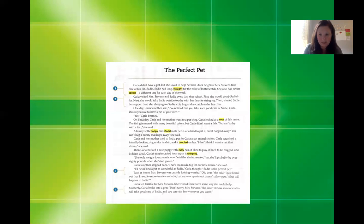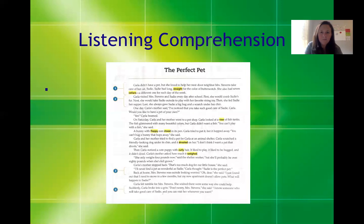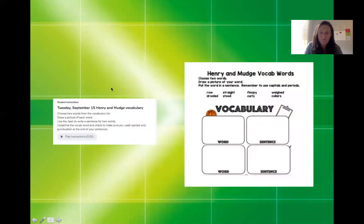All right. I hope you enjoyed that listening story and those comprehension questions that went along with our new vocabulary words that we're learning this week. After you feel good about the vocab words that I just talked to you about, I want you to think about, well, you're going to be going on Seesaw. And today's assignment is called Henry and Mudge Vocab Words. You are going to choose two words. Draw a picture of your word and put the word in a sentence. Remember to use capitals and periods.